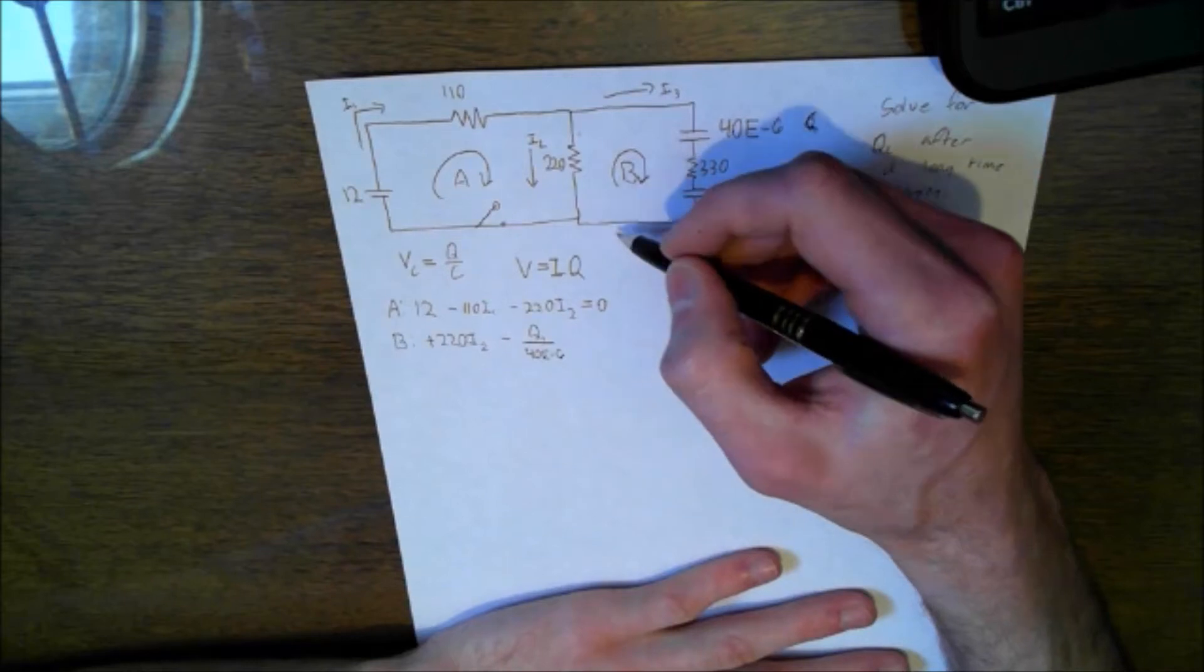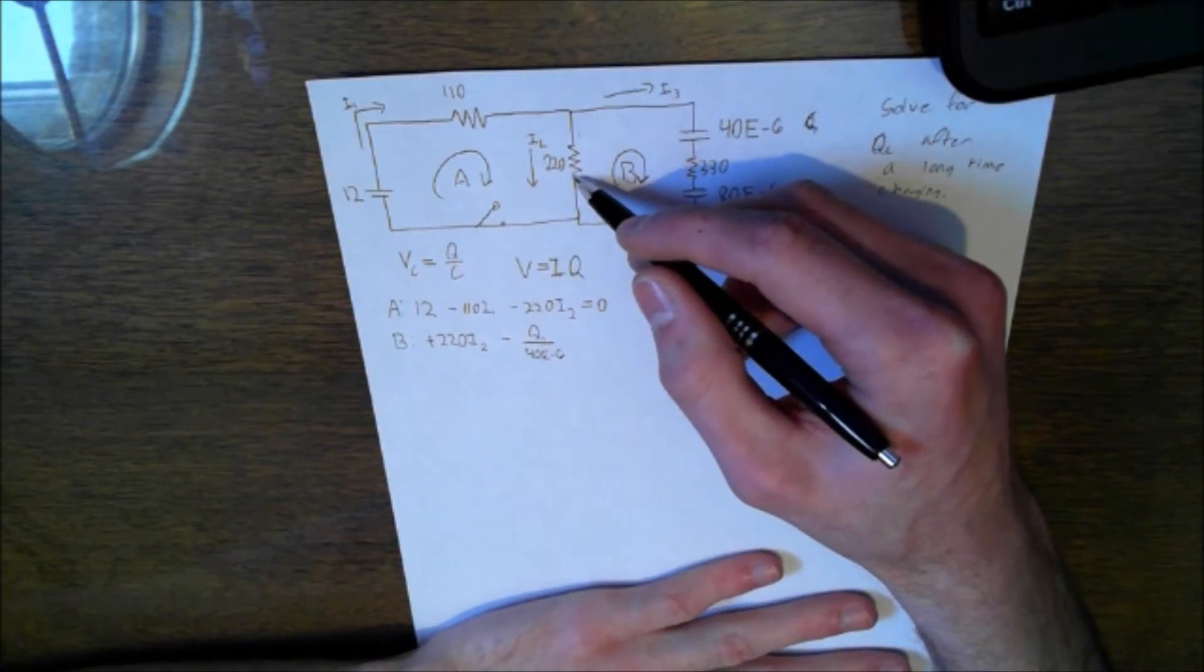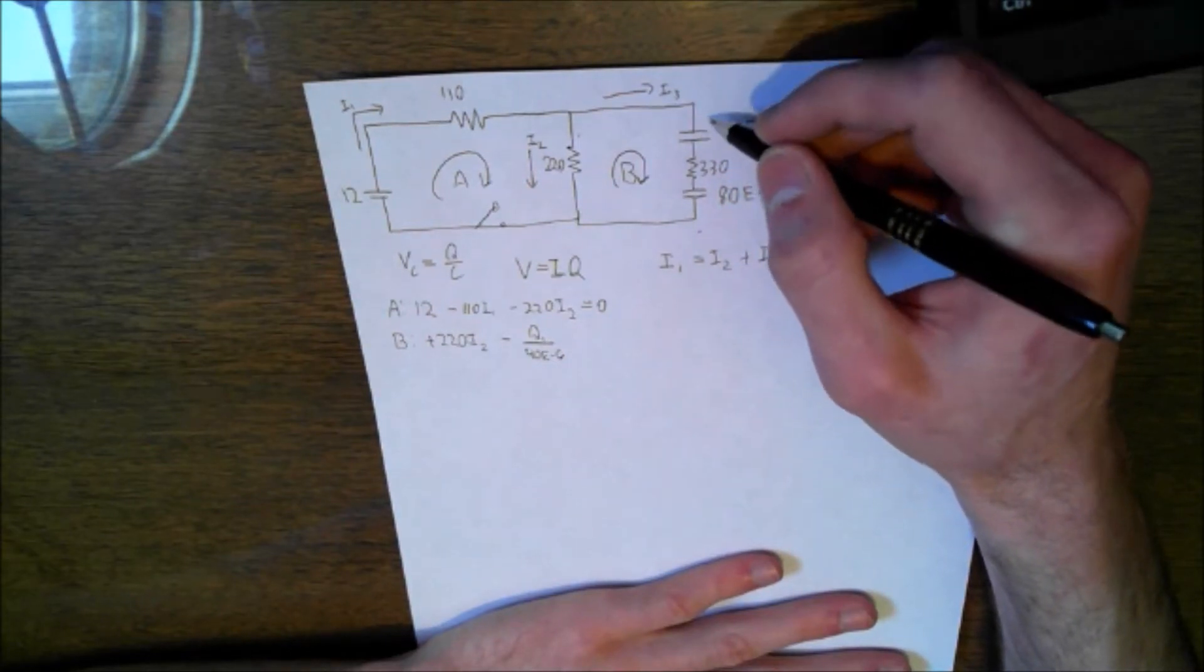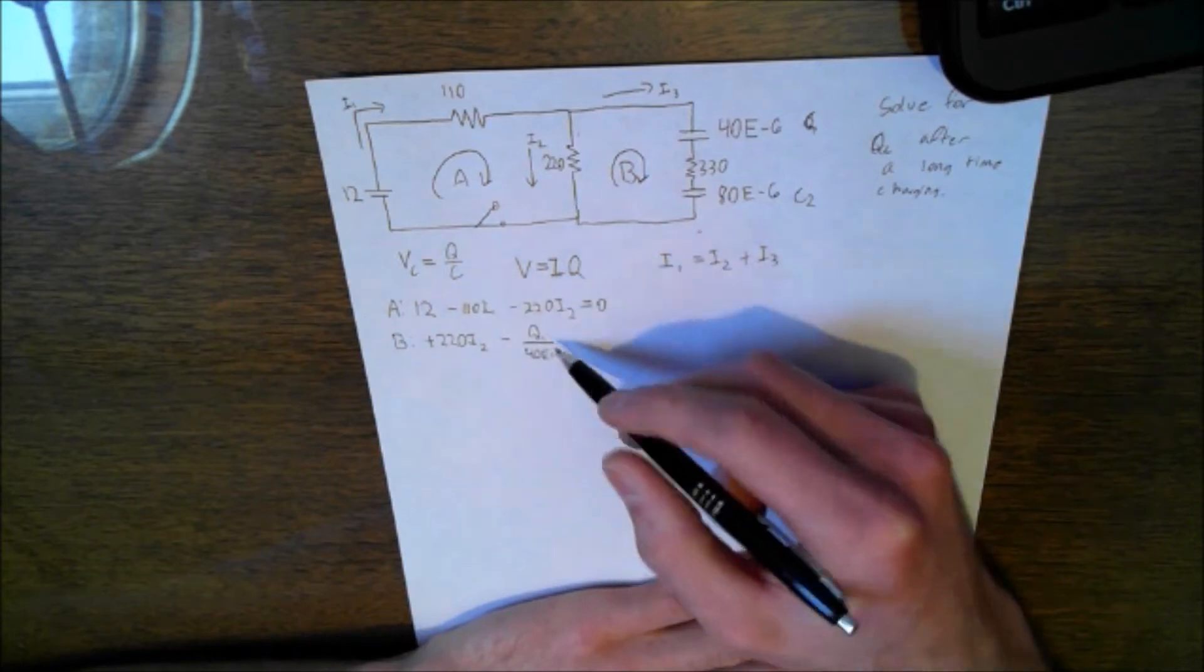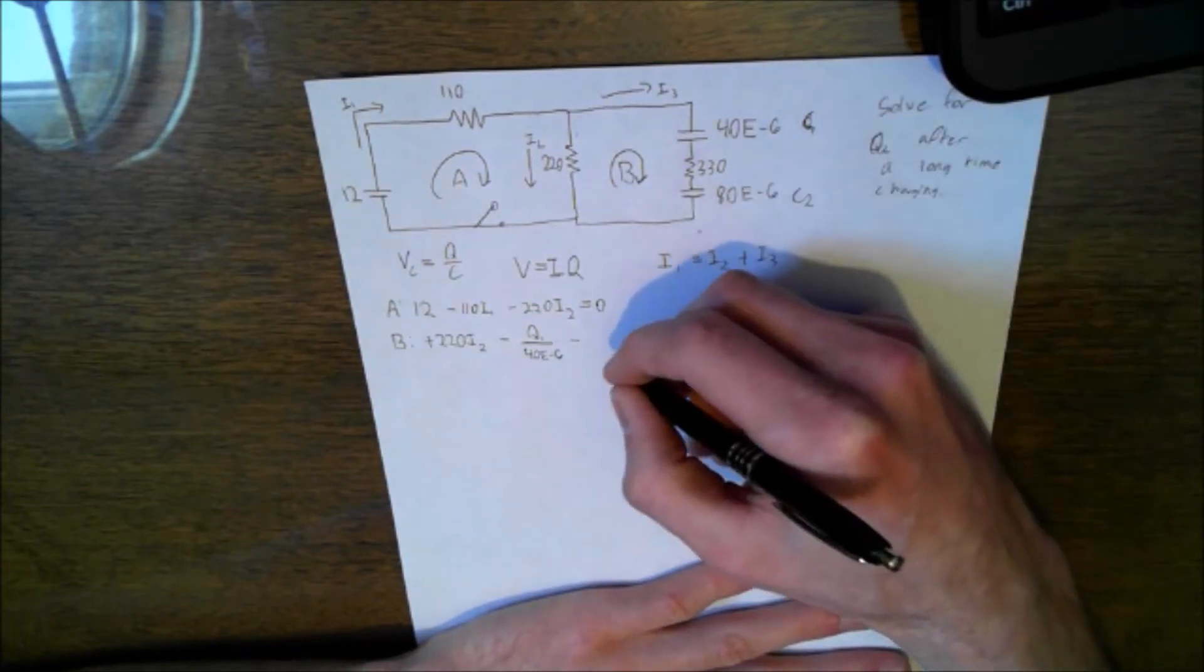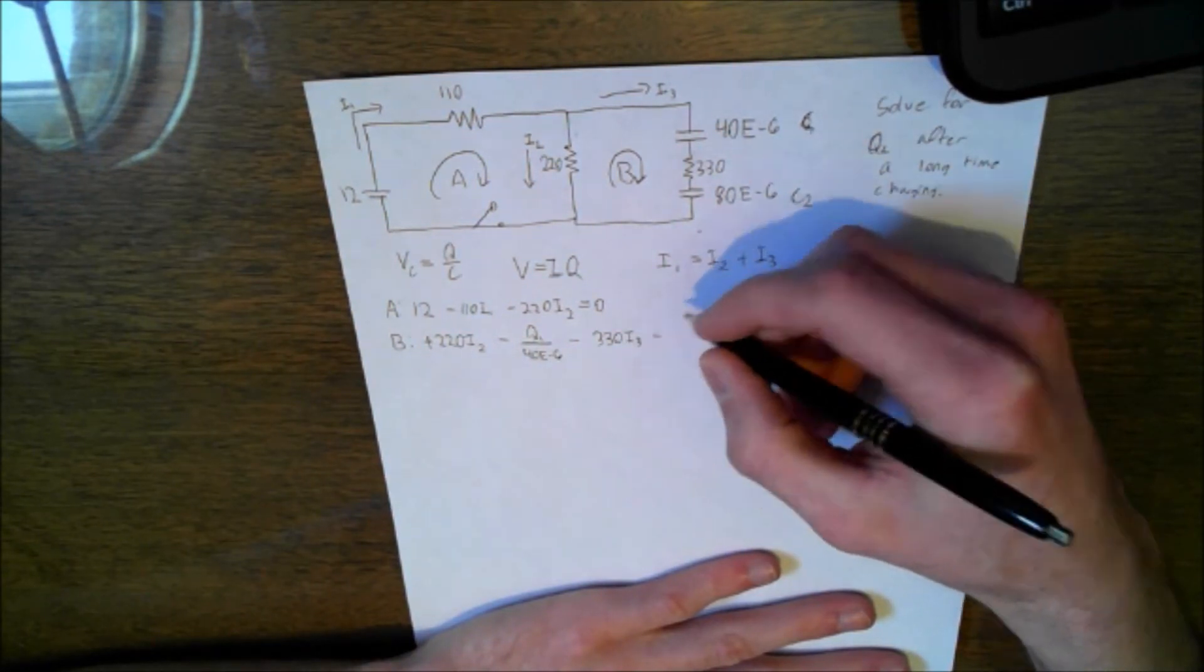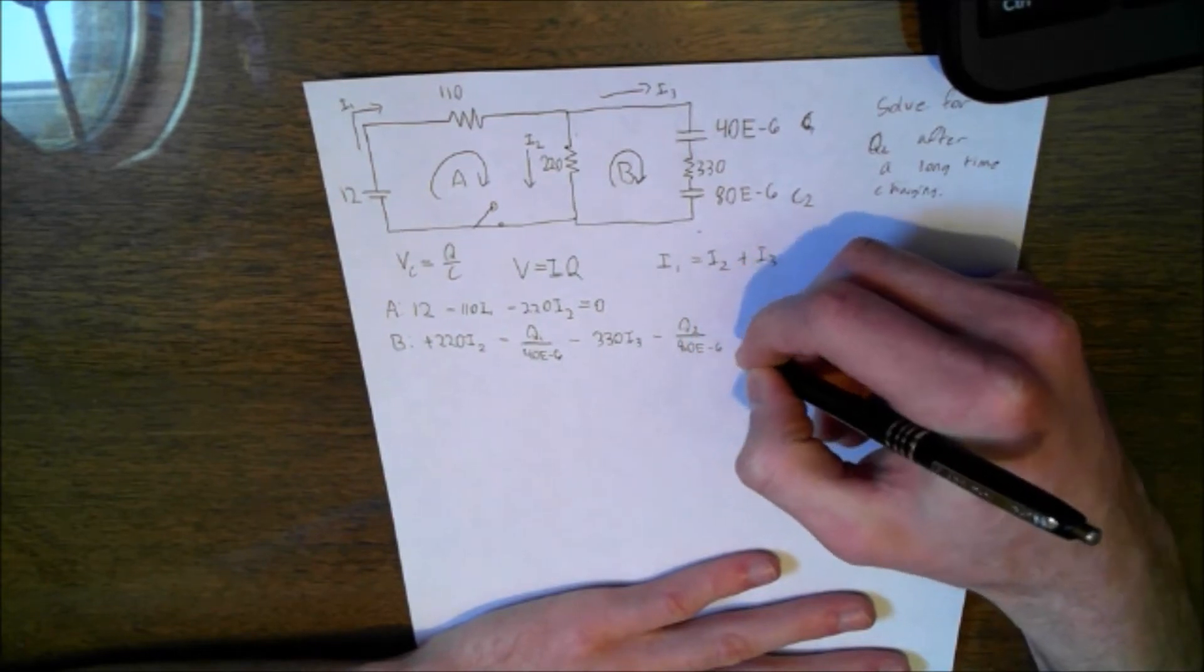Then we're going to get B. We're going to start down here. So we're going to get B is going to be, since this is moving, the loop is moving in the opposite direction of the current across this resistor, we're going to get a voltage gain. So it's going to be plus 220 I2. And then since we're moving in the direction of the current with the loop, we're going to get a voltage drop across this capacitor. So it's going to be Q1, this formula V equals Q over C. We're going to get Q1 over the capacitance of this. And then we're going to get a voltage drop across this resistor, so that's going to be 330 I3. Again, because we're moving in the direction of the loop with the current. And then we're going to get another voltage drop across this capacitor, which is going to be Q2 over 80E-6 equals 0.